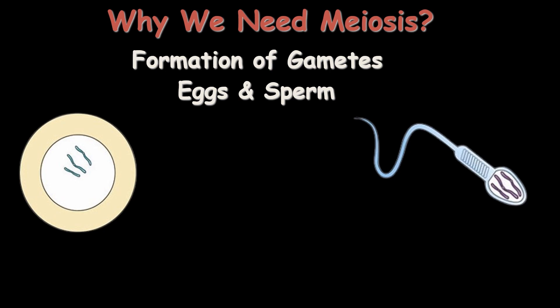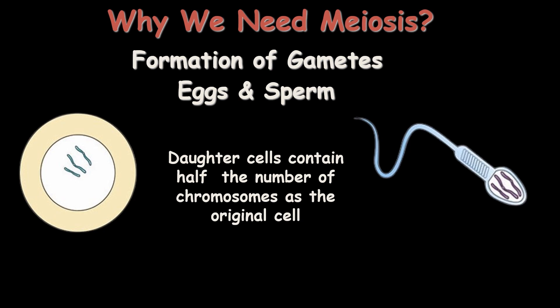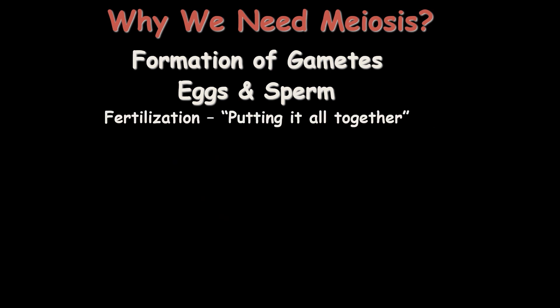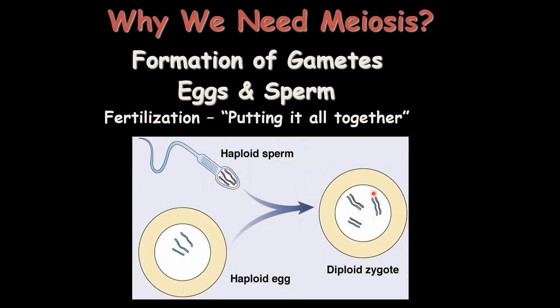For the formation of gametes — eggs and sperm cells — the number of chromosomes must be half compared to that of the parent cell. Since the parent cell contains 46 chromosomes, each gamete must contain 23 chromosomes. 23 chromosomes come from the mother and 23 from the father. Together they form the diploid cell, which contains 46 chromosomes and makes human life possible. These haploid cells — egg cells and sperm cells with 23 chromosomes each — are produced by the process of meiosis.